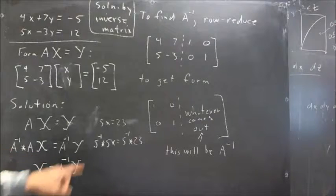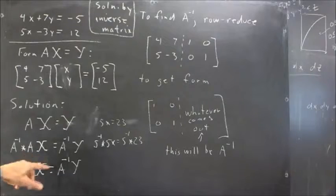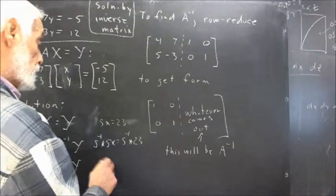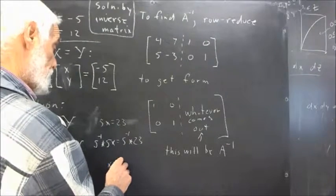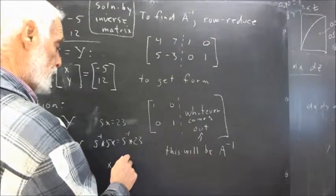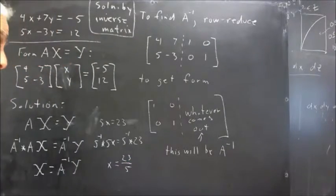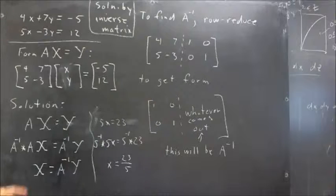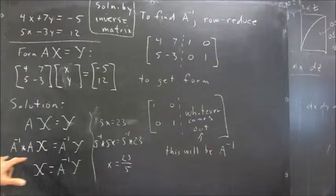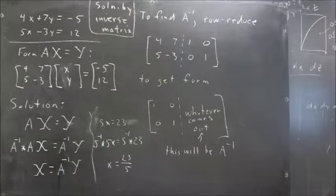A to the negative 1 we call the inverse matrix. Now, you don't know how to get an inverse matrix, but you're going to in a minute. If we do that, well, just as here, 5 to the negative 1 times 5, that's a multiplicative inverse, and that's going to give us just X. And then 5 to the negative 1 times 23, well, the multiplicative inverse of 5 is 1 over 5, so that's going to give us 23 over 5.